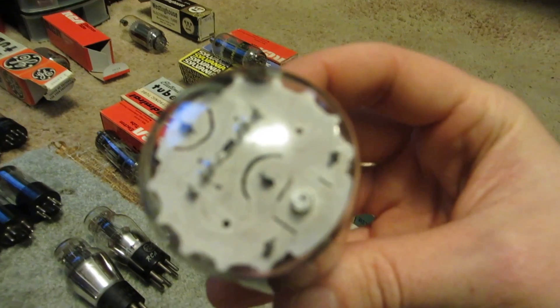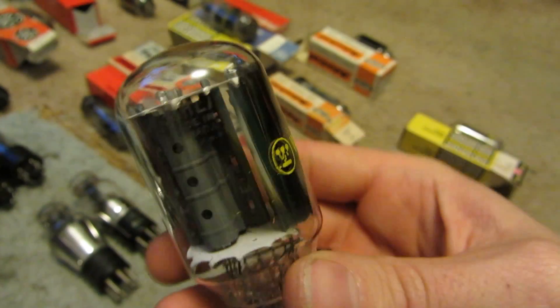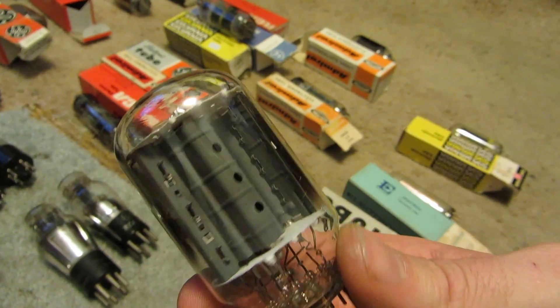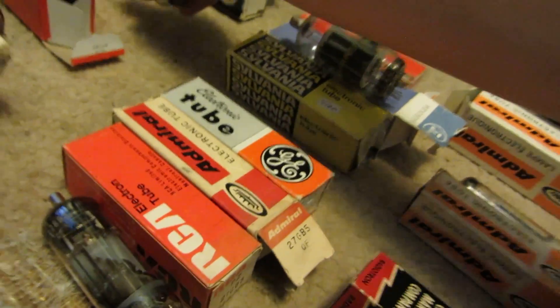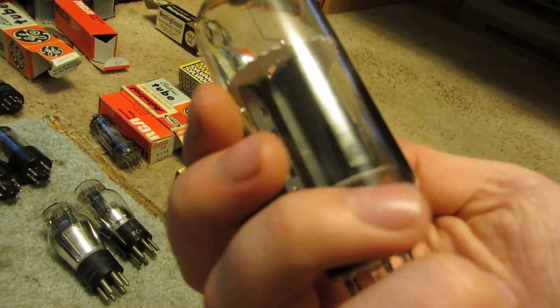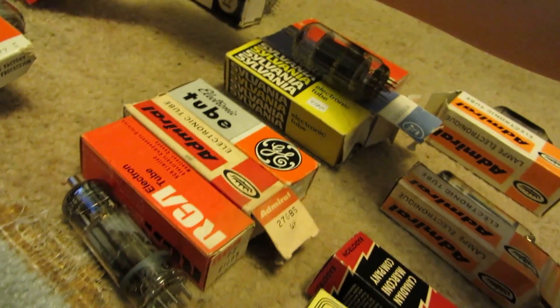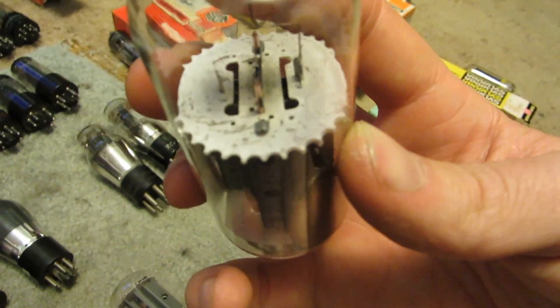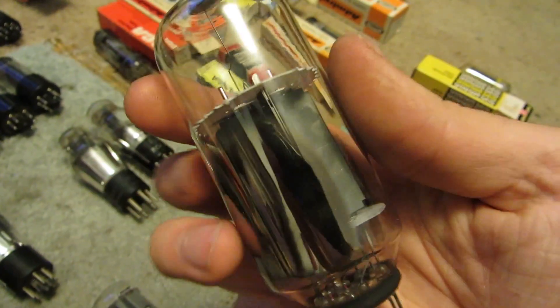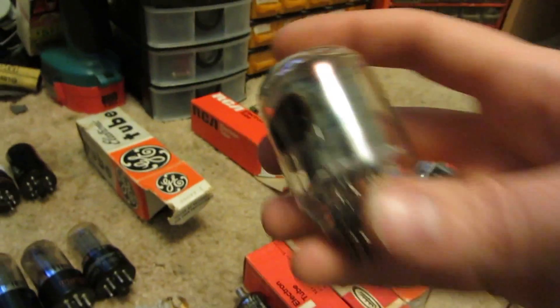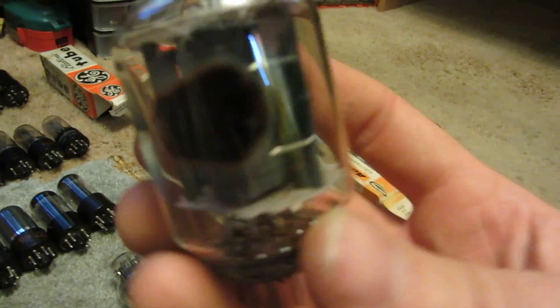A 38HE7, a 38HE7, and what's this one? Let me look at the box. It's a 31LQ6. And a 33GY7.